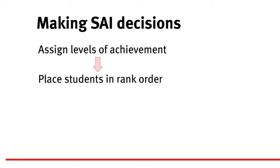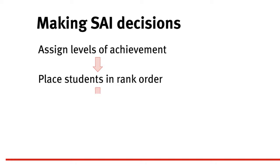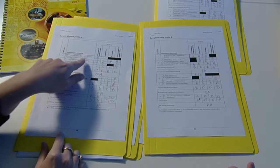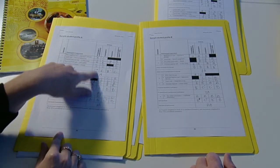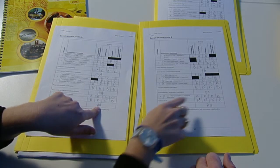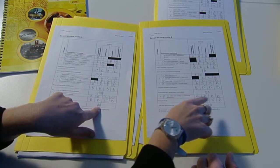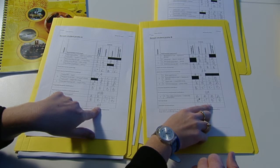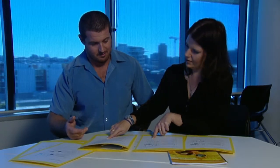The third step in the process of allocating SAIs is to decide on gaps in the rank order to show the real differences between students. This step is crucial for accurate representations to be made. Teachers must carefully compare students' folios of work and decide how similar or how different students are to each other.